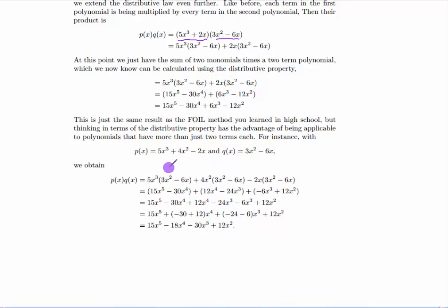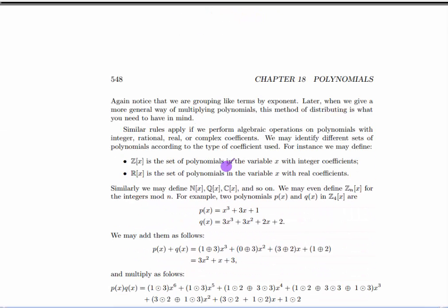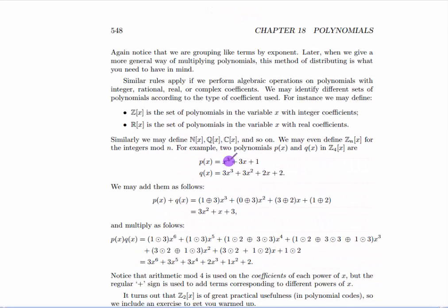And this goes for even larger polynomials. Distribute from the left, distribute from the right. Group terms of like powers. Now you could distribute from the right first, if you like. It turns out it doesn't matter.